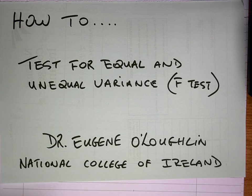Hi everybody. This is Eugene O'Loughlin, Lecturer in Computing at the National College of Ireland, and welcome to my series of short how-to videos. In this video, we're going to learn how to test for equal and unequal variances. It's called the F-test, and we're going to learn how to do that by hand.